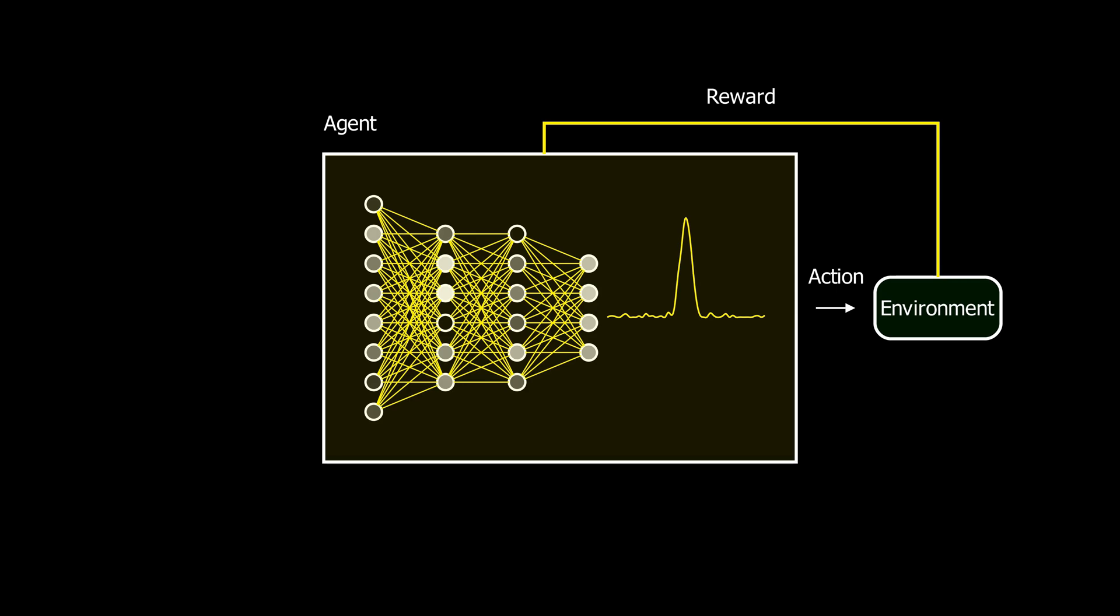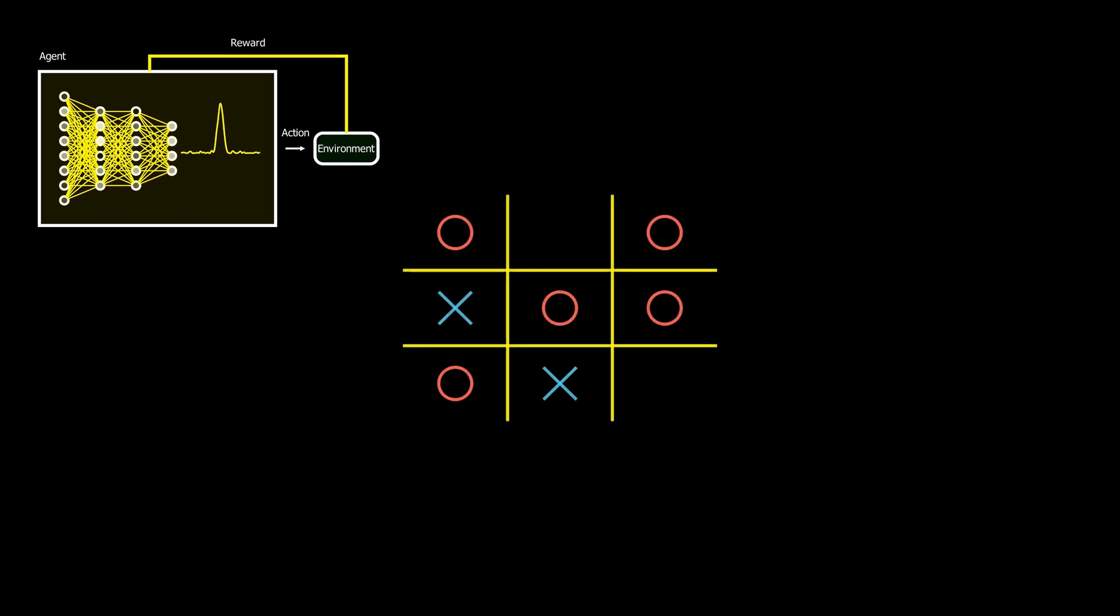The agent is the player, either X or O, that makes decisions on where to place their mark on the board.